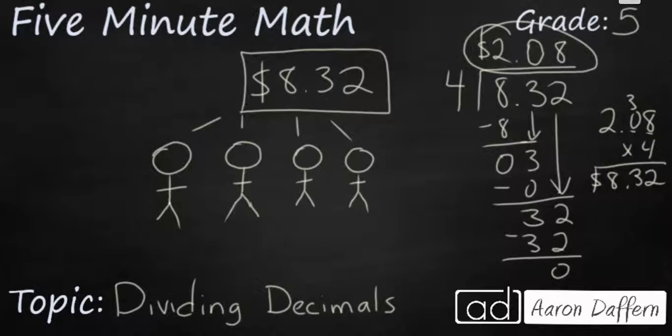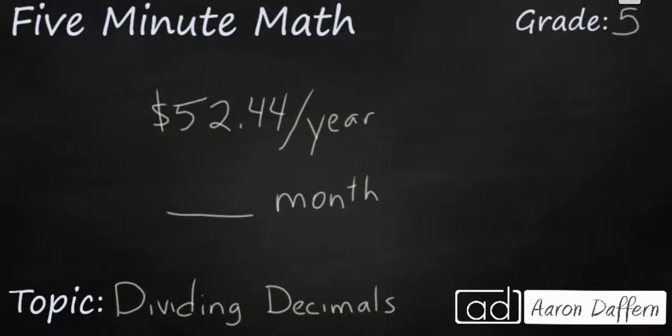Let's look at a new problem. Let's say that you wanted to subscribe to a magazine, and the cost is $52.44 for the entire year. You want to know how much it's going to cost each month of this subscription, assuming that each month is the same. Let's set this up as another problem. We're going to use 12 as our divisor because there are 12 months in a year. And our dividend is going to be $52.44.